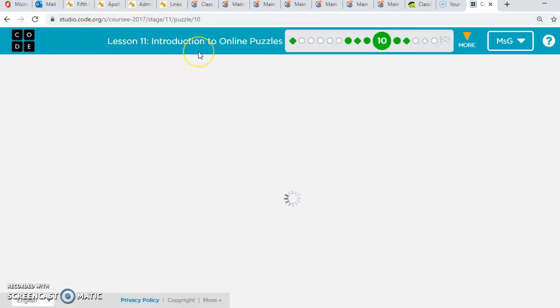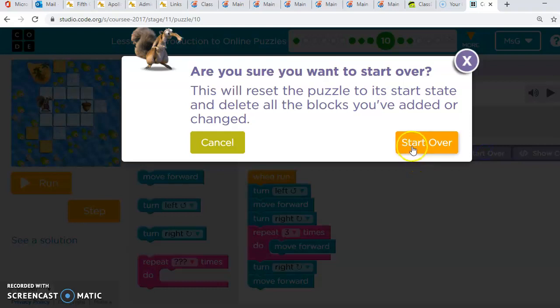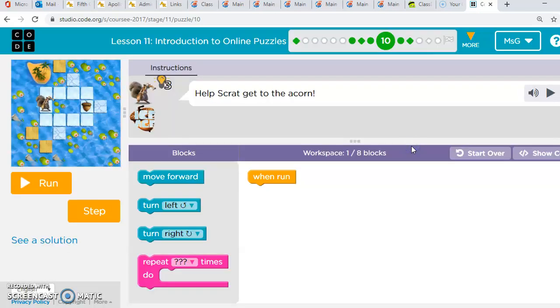All of these activities are under Lesson 11 in Code.org. So if you can log into your Code.org account from home, you can complete Lesson 11 online. If not, just complete the worksheet and send me an email of it. For puzzle two, we need to get Scrat to the acorn using eight blocks.